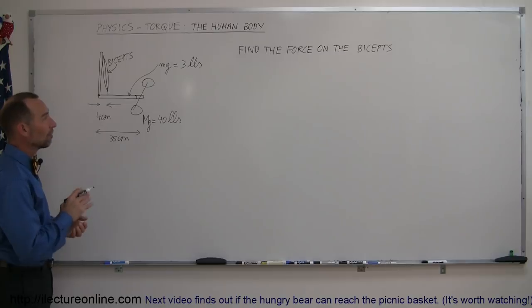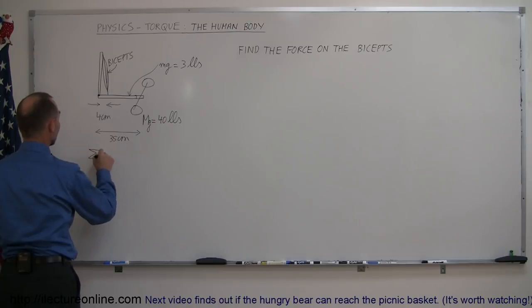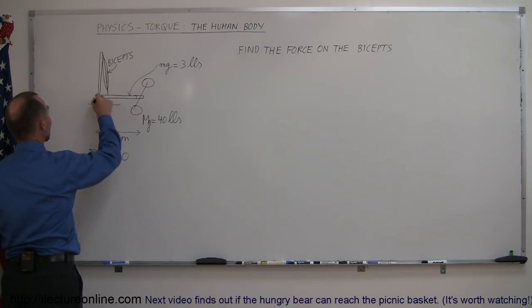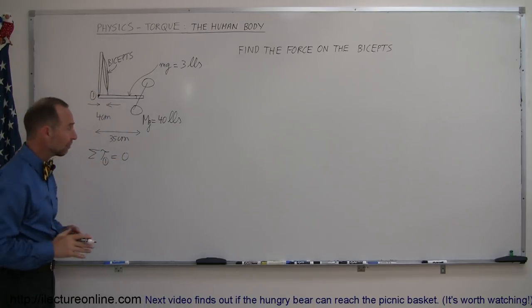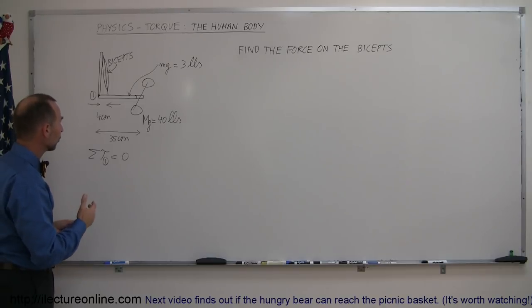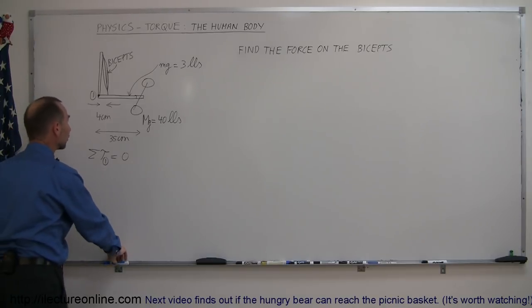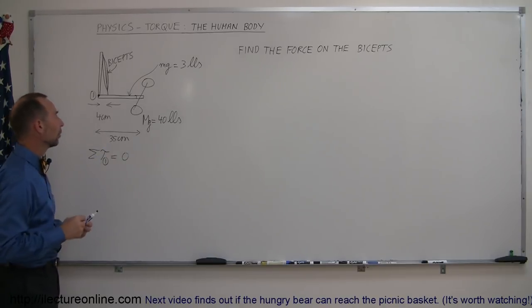Taking that as assumptions find the force on the biceps and of course this is a typical torque problem that means that the sum of all the torques about some pivot point has to add up to zero. Let's make the pivot point right here the joint in the elbow and now we have to find all the forces that act on that causing torques about the elbow joint.